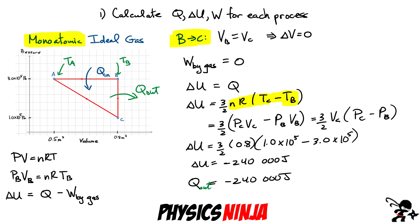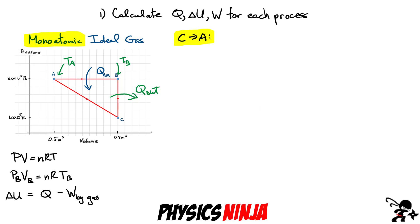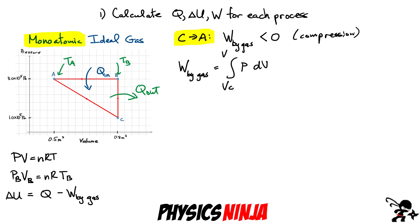For process C to A, let's start with the work done by the gas. This is a compression — starting at a large volume going toward a smaller one — so the work done by the gas should be less than zero. To calculate it, we evaluate the integral of P dV from V_C to V_A. Rather than integrating the straight line equation for pressure, we can use the area under the curve, which is a trapezoid shape.